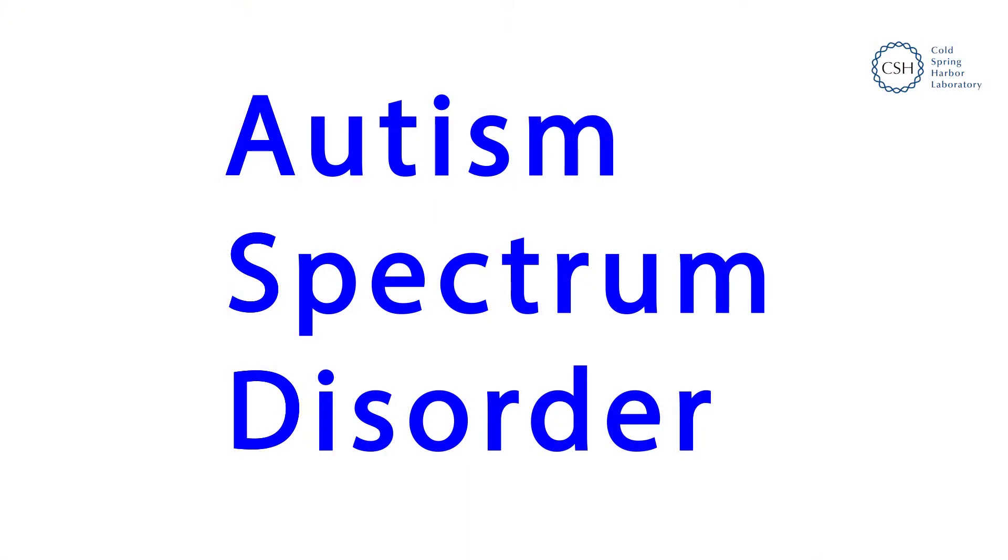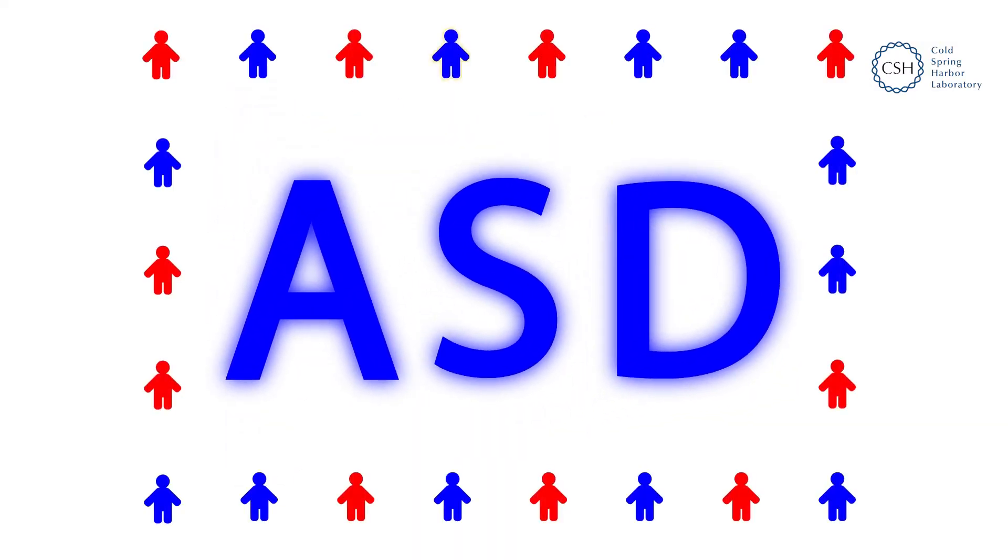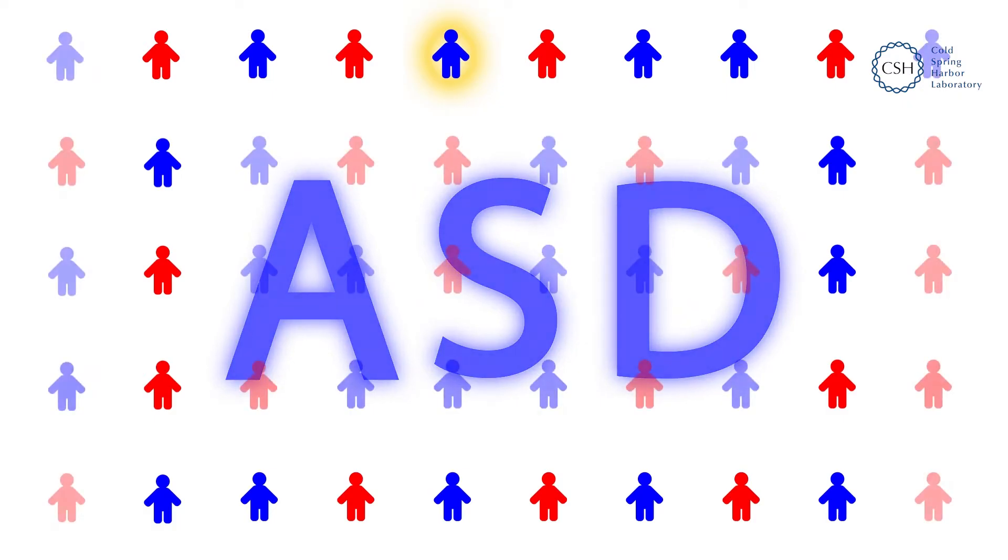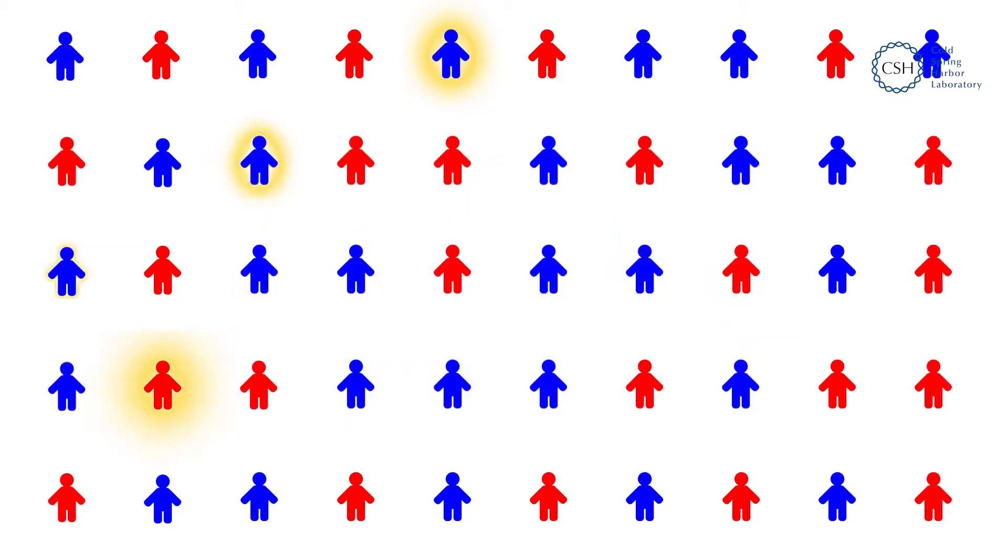Autism Spectrum Disorder, or ASD, affects about 1 in 36 children, according to the Centers for Disease Control and Prevention. Despite its prevalence, little is known about the exact cause of ASD, and there is a lot of misinformation out there on the topic.